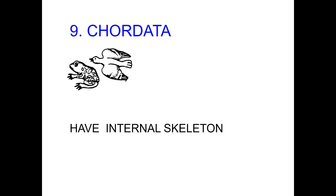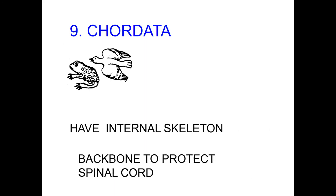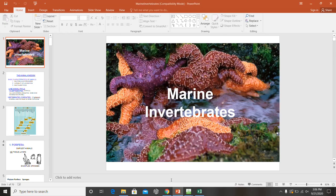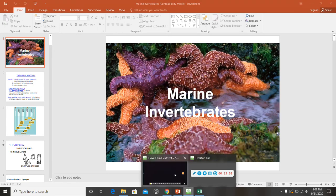Chordata — this is us. They have an internal skeleton and a backbone to protect their spinal cord. Examples: fish, reptiles, birds, amphibians, mammals. And we are done. If you have any questions, let me know. I'll talk to you guys later. Have a good day. Bye.